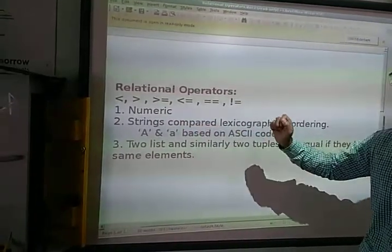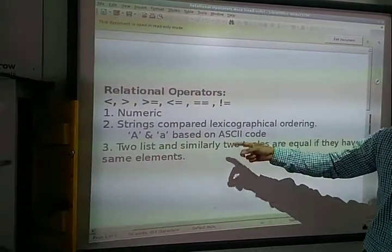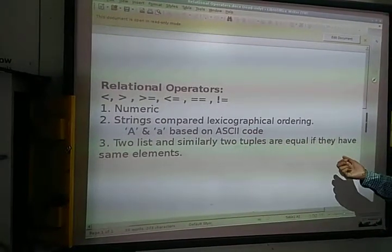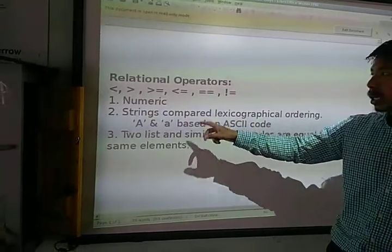So this is how the strings are compared. The next one is two lists and similarly two tuples are equal if they have same elements. So if two lists or two tuples have the same elements then those are equal.